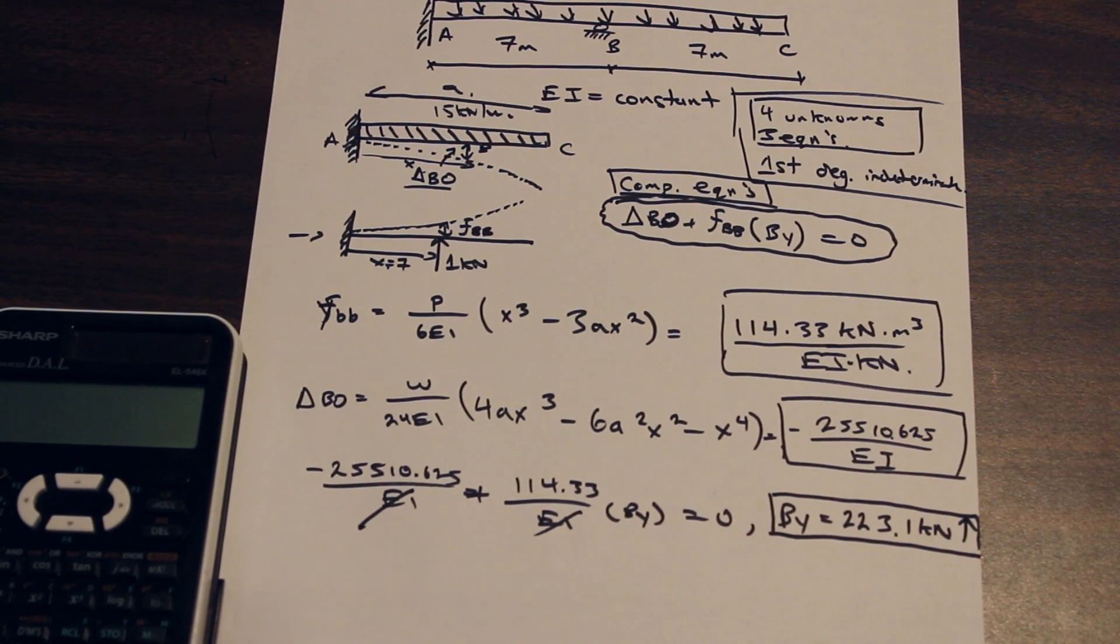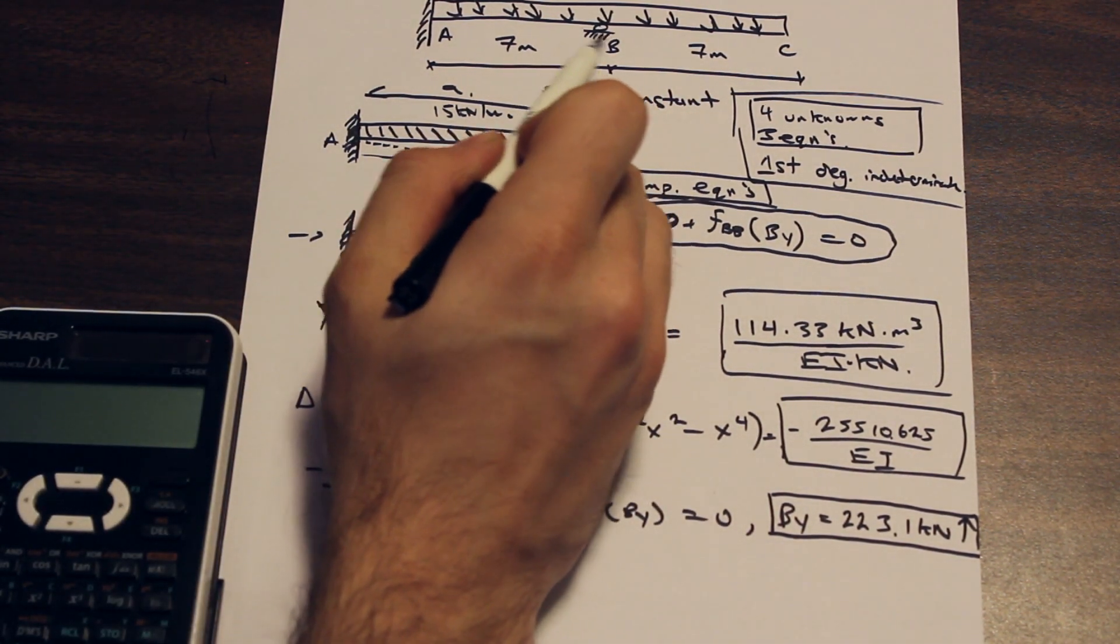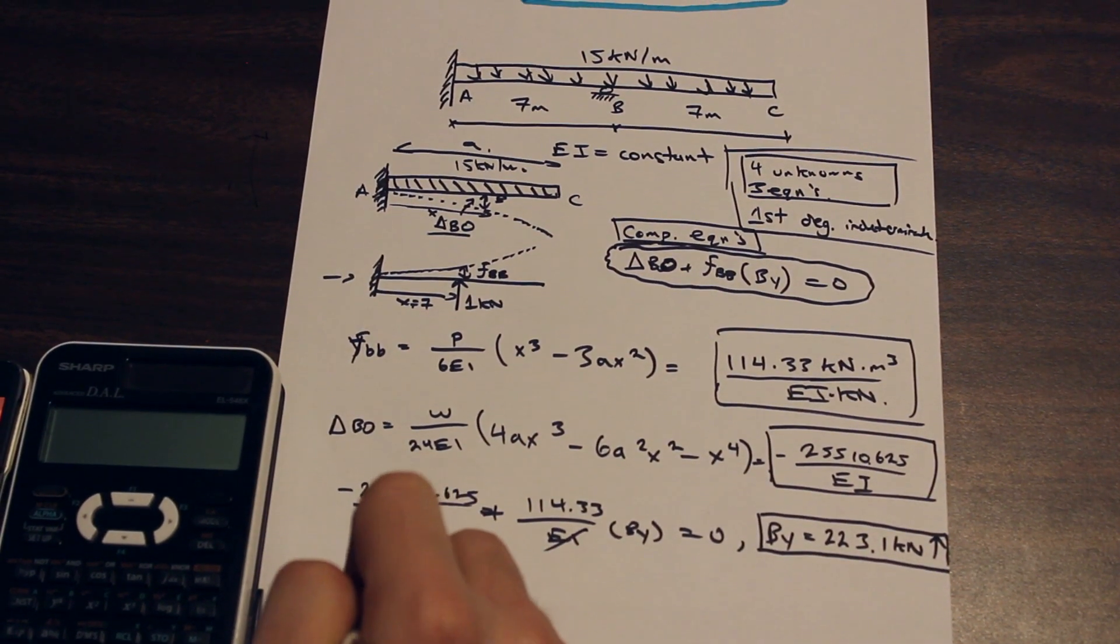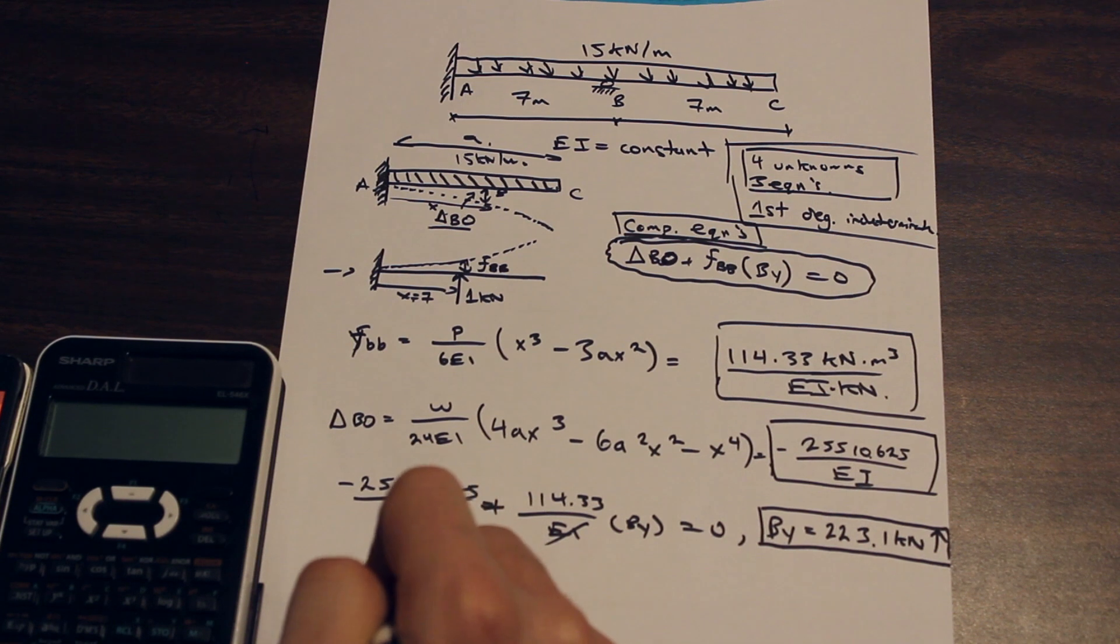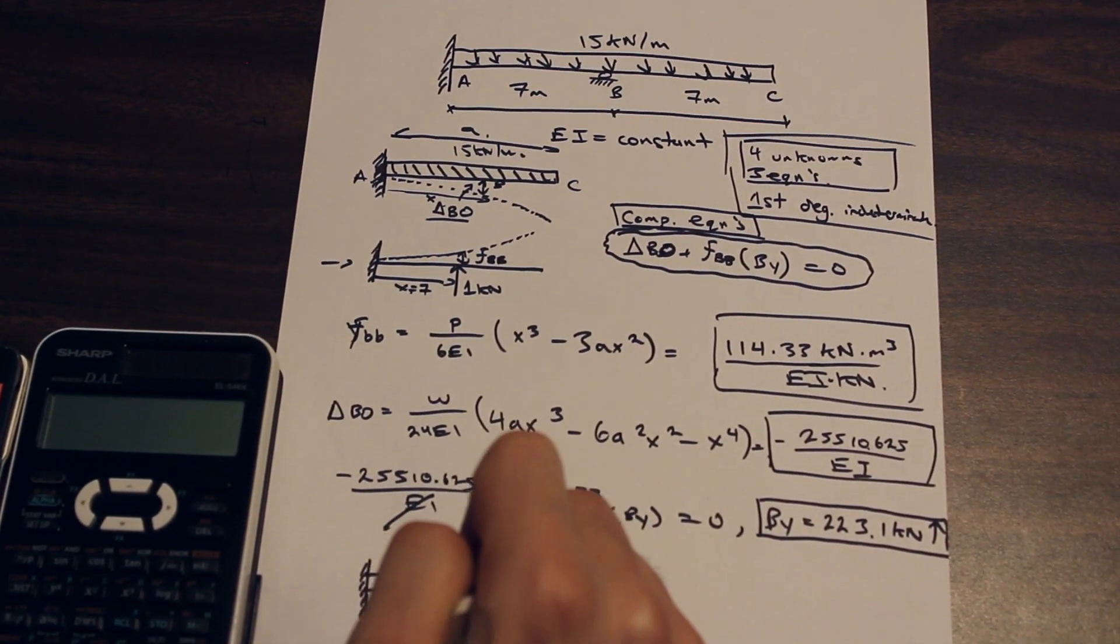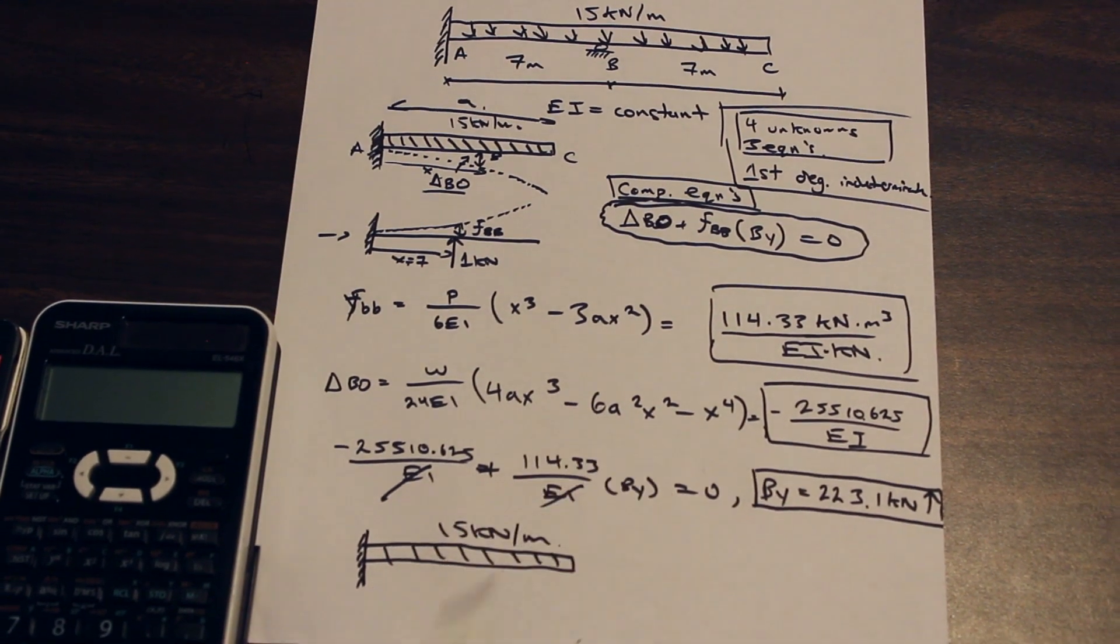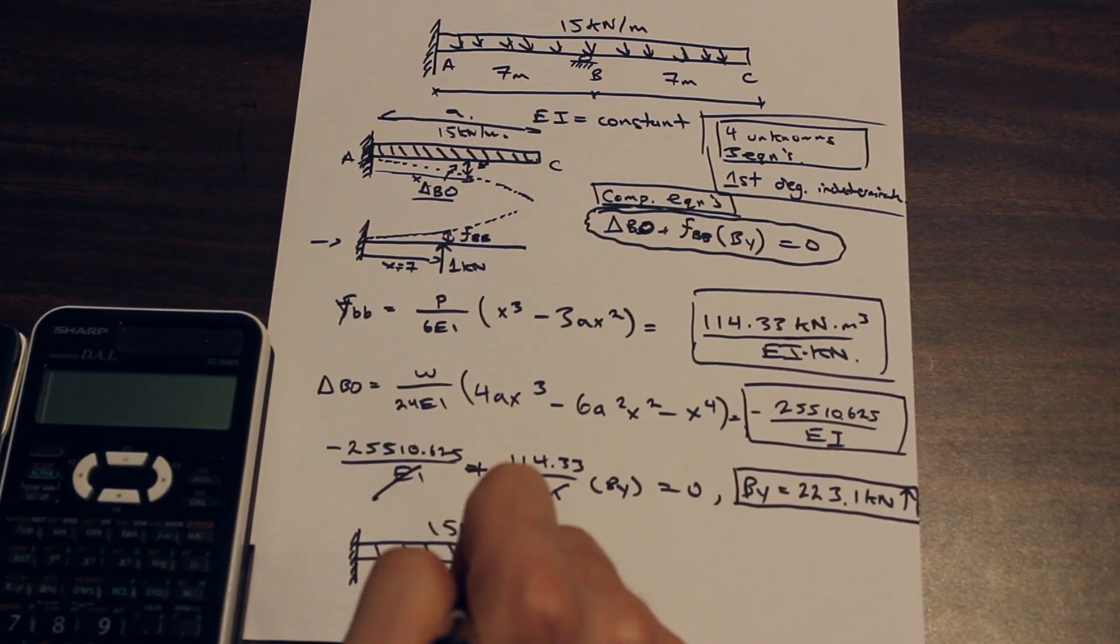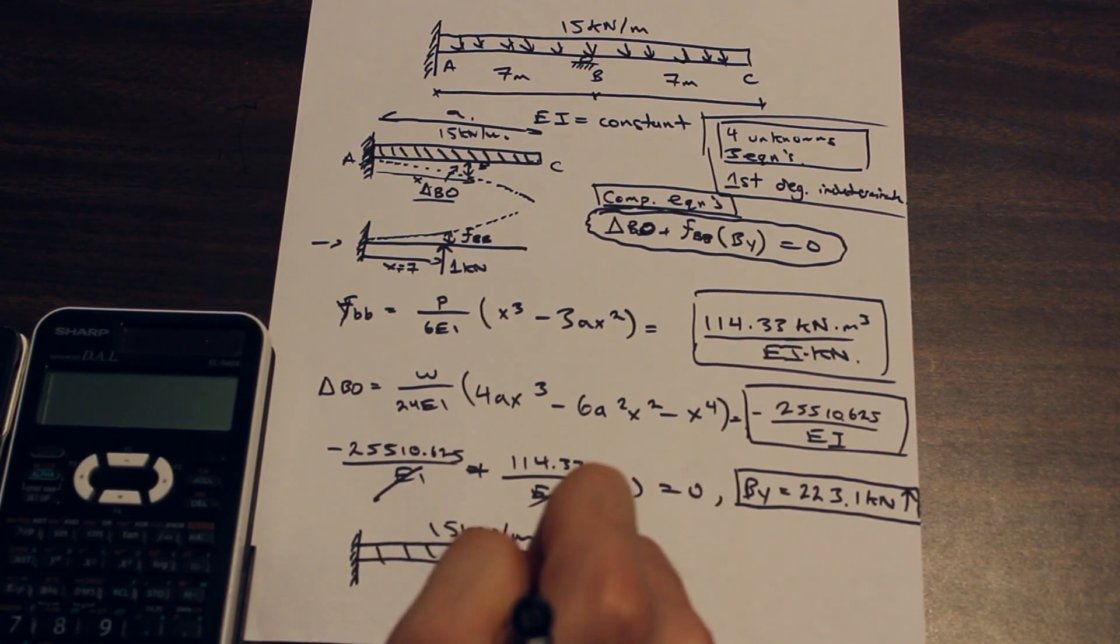Perfect. So from this point in the equation, from the question now, we have the value of the reaction at BY. And what does this mean? This means now that the beam looks something like this. So we still have our load here, but instead of an unknown at B, now we have a force or a point load of 23.1 kilonewton.